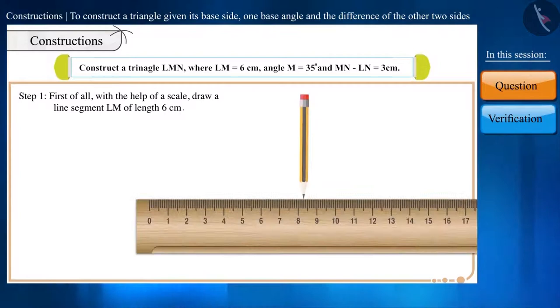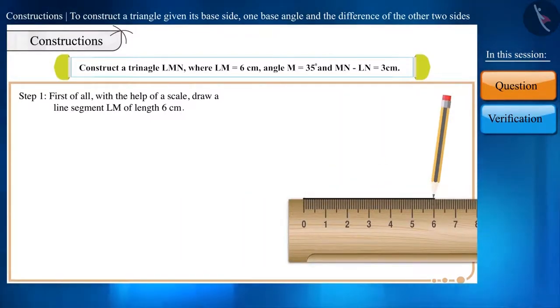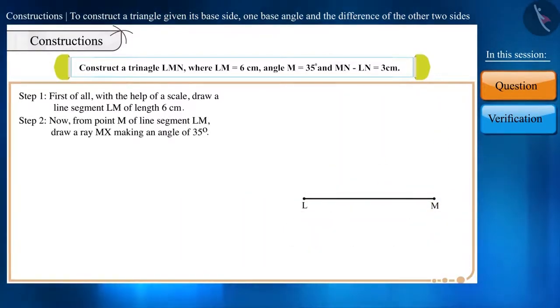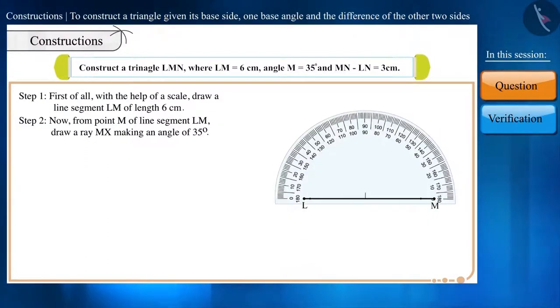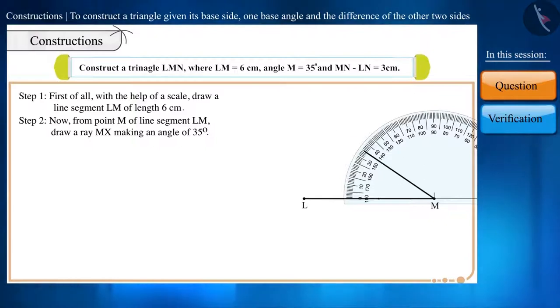Step 1. With the help of a scale, draw a line segment LM of length 6 cm. Step 2. From point M of line segment LM, draw a ray MX making an angle of 35 degrees.